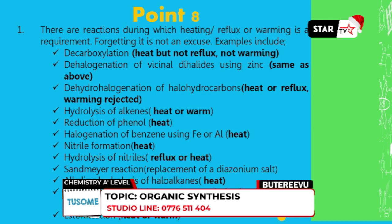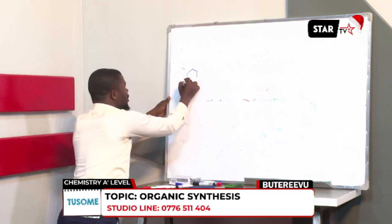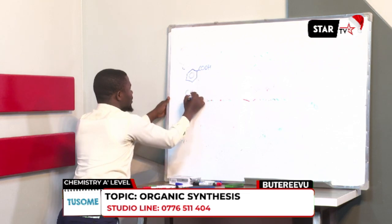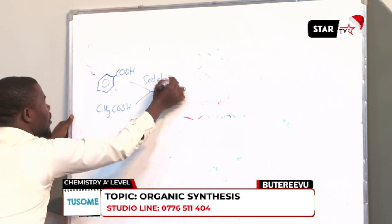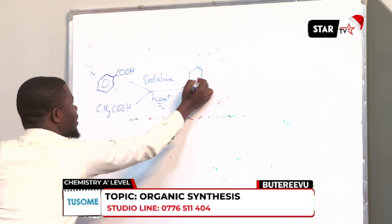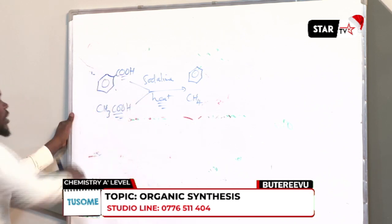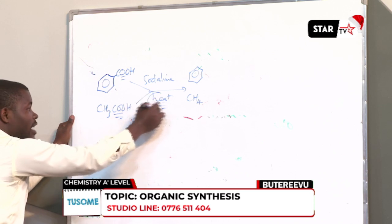The first reaction under point 8 is decarboxylation. If you're doing a decarboxylation — removing a carboxyl group from a carboxylic acid — you must heat. You should not reflux or warm. For example, using sodalime and heat on benzoic acid gives benzene, and on ethanoic acid gives methane. The carboxyl group is removed — that's why the reaction is called decarboxylation. The word is strictly heat.